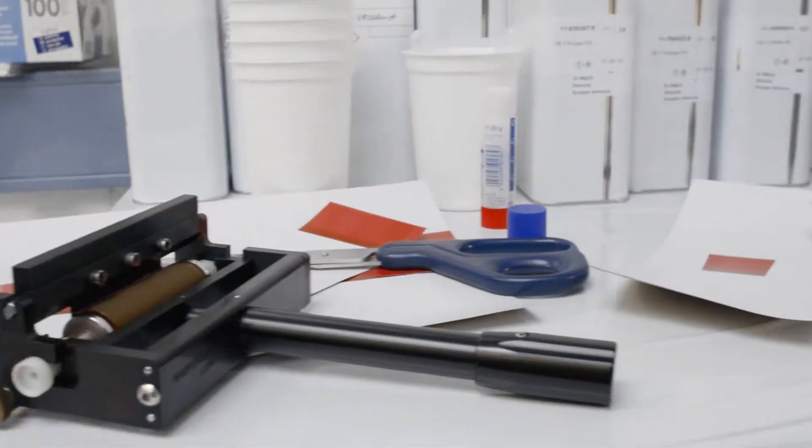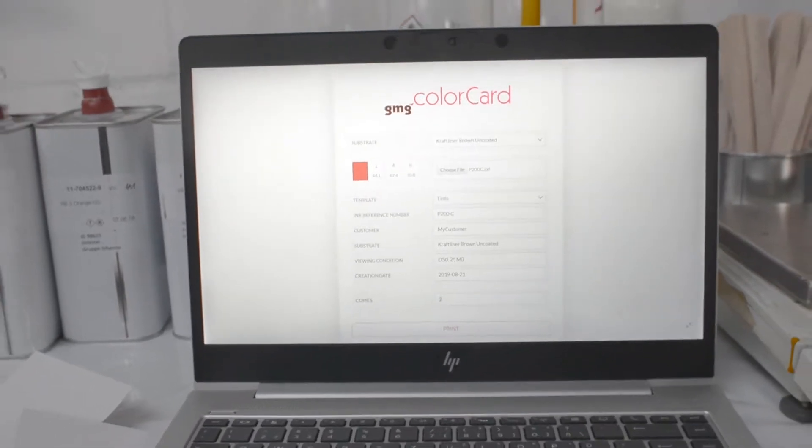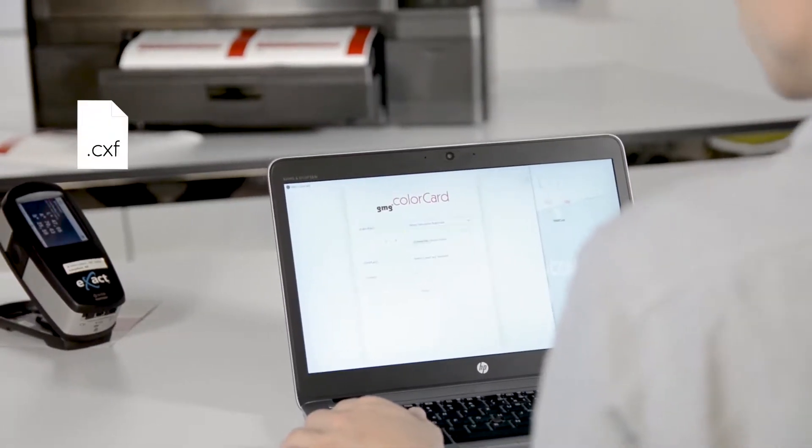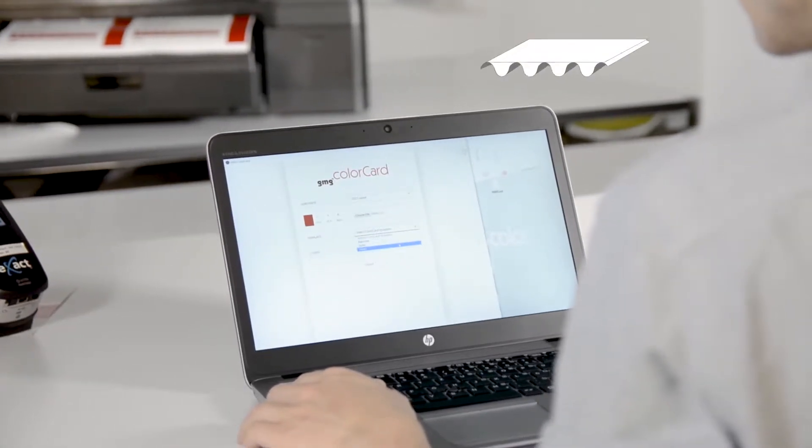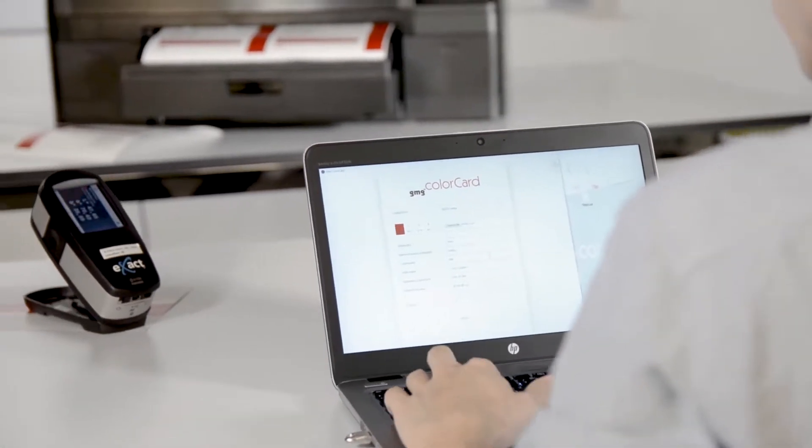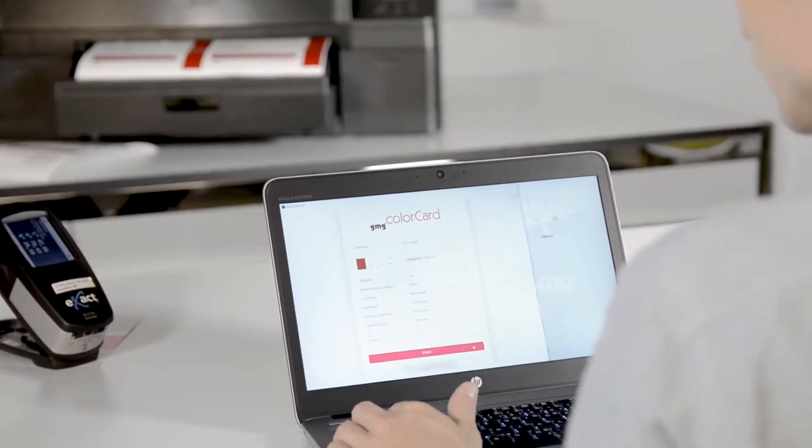Get rid of inaccurate manual processes with GMG Color Card and bring your color communication to the next level. Simply import your measurement file from ink formulation into the GMG Color Card app, choose your substrate, define the number of copies and print. That's it!